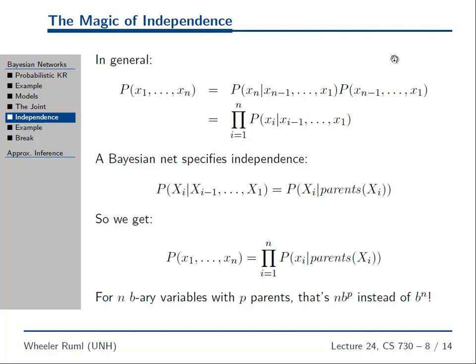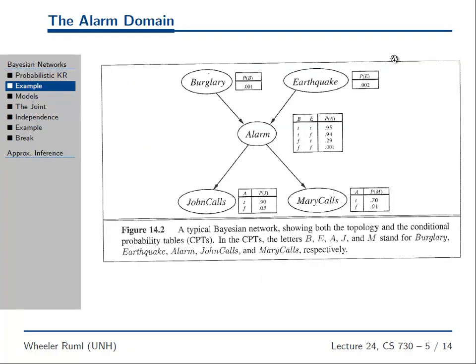But if you have a Bayes net where variables only depend on their parents, then if each variable only has p parents, then for each of the n variables, the CPT has two to the p rows, all right? Here, back in our example, this alarm had two parents, so there are four configurations of the parents. So you had to have four rows, two to the two rows. So here, if you look, we've got, what is this, five variables? So ordinarily, you'd have to have two to the fifth is 32 probabilities, but instead, we've got one, two, three, four, five, six, seven, eight, nine, ten.